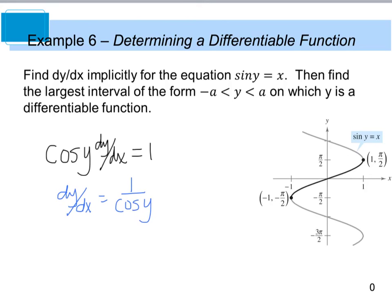To find the largest interval of the form negative a to a on which y is differentiable, the graph helps us the most. We need to restrict our function so that we can use the vertical line test. That's going to happen between values of y from negative pi over 2 all the way up to positive pi over 2. So we have negative pi over 2 is less than y which is less than positive pi over 2. What that means is I can now rewrite my function cosine y as an explicit function of x when looking at this range.